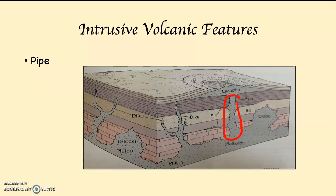A pipe is a conduit through which liquid rock — magma — flows to the surface and feeds a volcano, which you can see circled there. So if a volcano is going to form, what's going to have to happen is magma is going to have to reach the surface and then flow out or blow out onto the surface. It reaches the surface through a pipe.